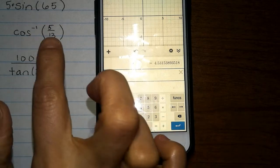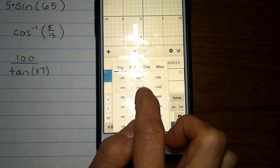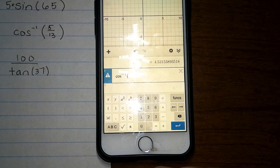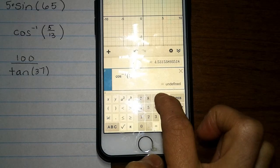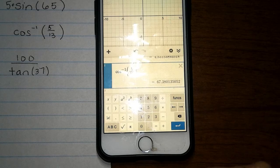To do cosine inverse, I'm going to click on functions, and there's a cosine inverse option. And to do 5 over 13, I'm going to say 5 divided by 13, and that will be my answer.